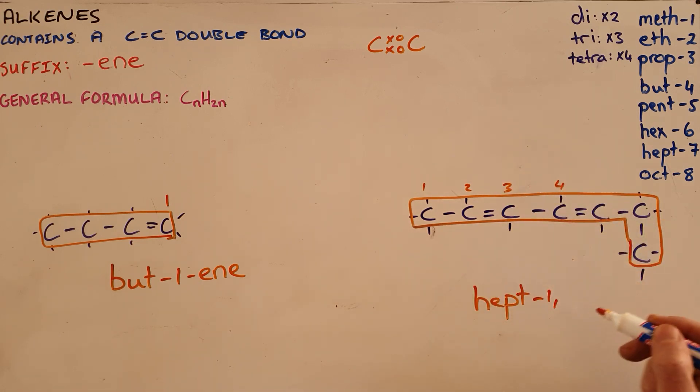We would call this HEPT-1,4-DI-EN, saying there are two double bonds.